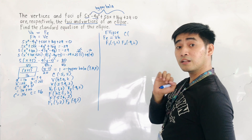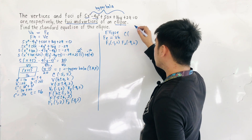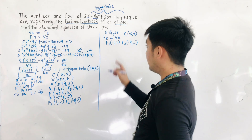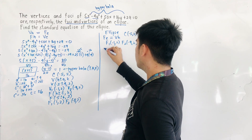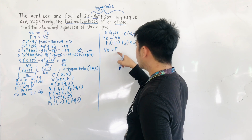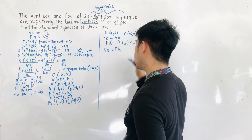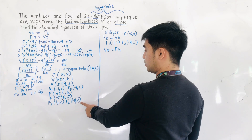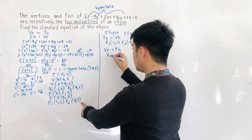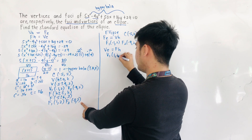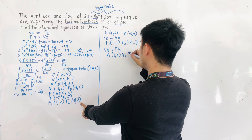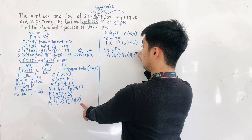The center will remain the same at (negative 5, positive 2). For the second condition, the vertices of the ellipse are equal to the foci of the hyperbola: V1 of the ellipse is (1, 2) and V2 of the ellipse is (negative 11, 2).